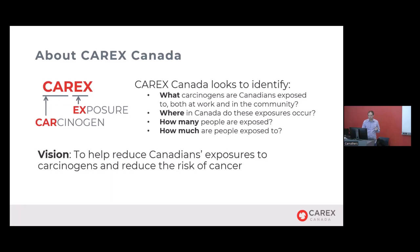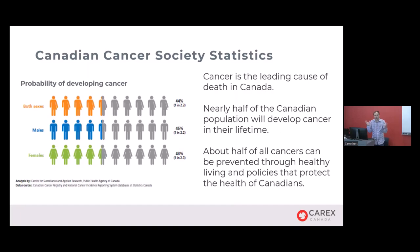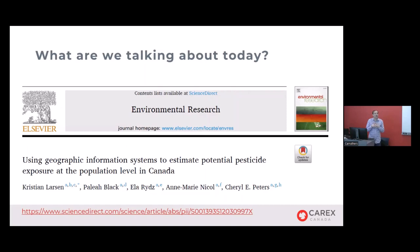Why do we care about carcinogens and cancer? According to the Canadian Cancer Society, cancer is now the leading cause of death in Canada and has been for about 20 years. Nearly half of Canadians — about 44%, or 45% for males and 43% for females — will develop cancer in their lifetime. About half of these cancers could be prevented through healthy living and reducing exposures, which is why it's so important to work on prevention through healthy behavior and reducing environmental and occupational exposures.